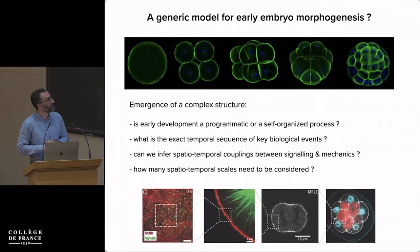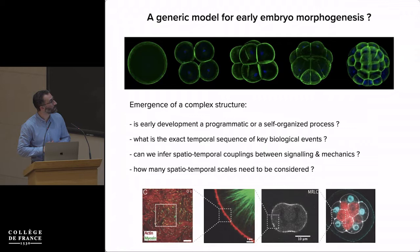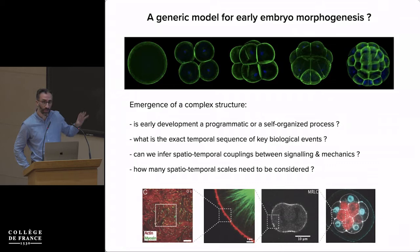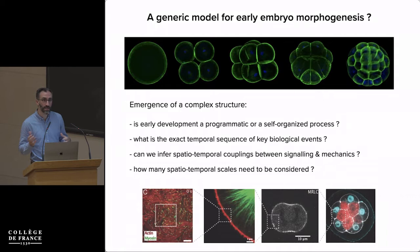On the other hand, genetic regulation constrains the development and the shape of cells. Some embryos have a very invariant and reproducible way of developing. One thing we want to do is extract the exact temporal sequence of biological events in these systems — what are the key mechanical and signaling events that led to the emergence of a specific structure? One of the biggest challenges is to infer the couplings between signaling and mechanics.